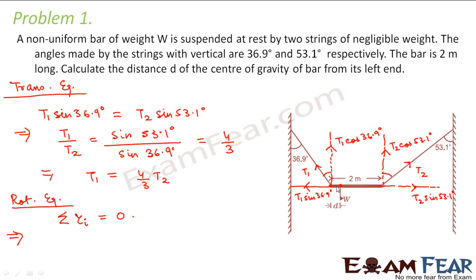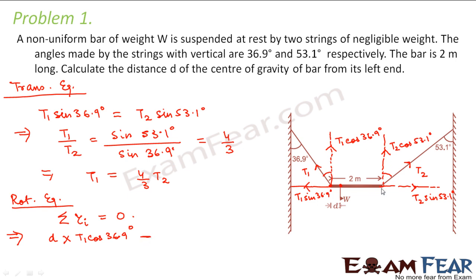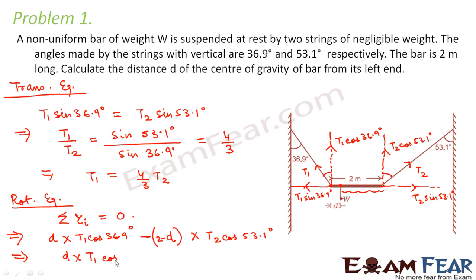The torque from the left end is d multiplied by T1 cos 36.9 degrees. The torque from the right end has a negative sign since it acts in the opposite direction, and the distance from the center of gravity to the right end is (2 − d). So the torque from the right end is −(2 − d) × T2 cos 53.1 degrees. Setting the net torque to zero: d × T1 cos 36.9° = (2 − d) × T2 cos 53.1°.